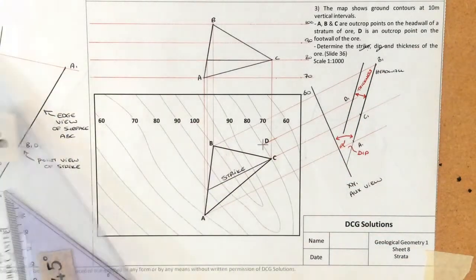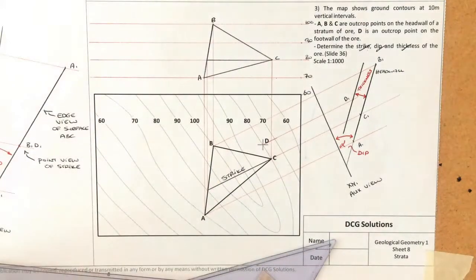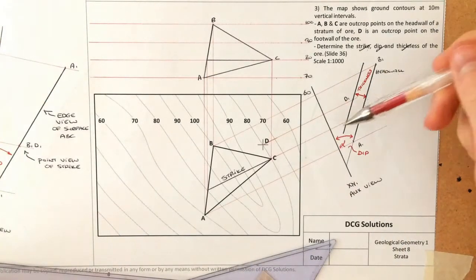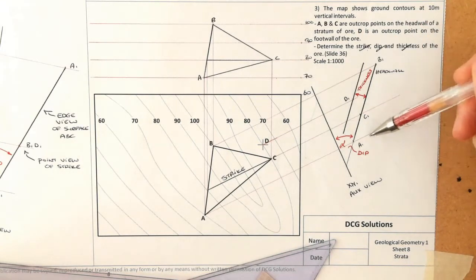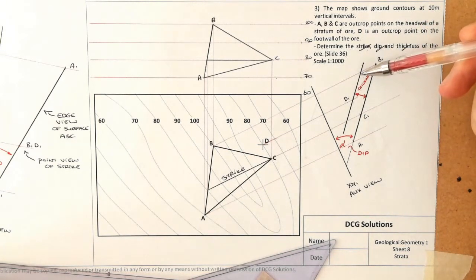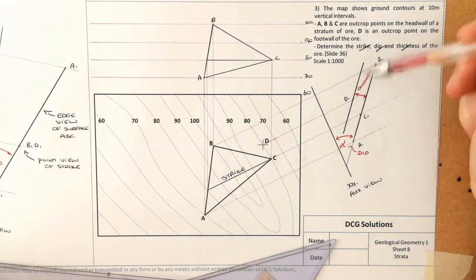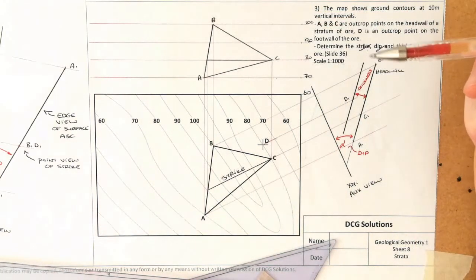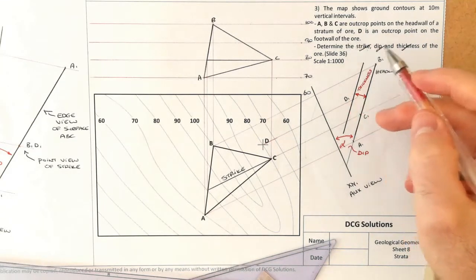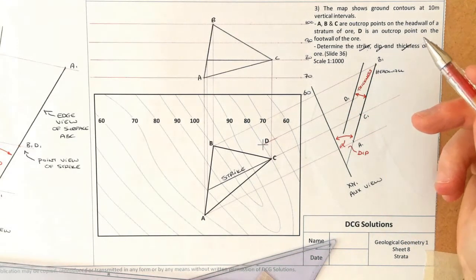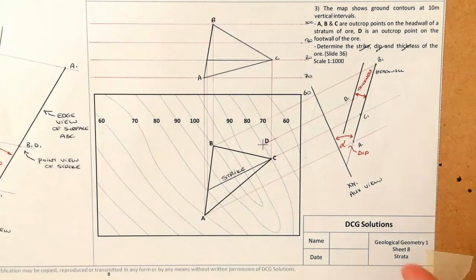That is our thickness. If you really wanted to, you could put in your contour heights — mark up 70, 80, and have lines running across — and actually get the triangular surface for the foot wall as well. But we have done the three things asked for: the strike, the dip, and the thickness in all three questions. These questions often come up especially in the ordinary level section of the mining geometry, or geologic geometry, questions.